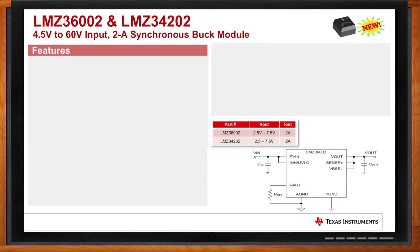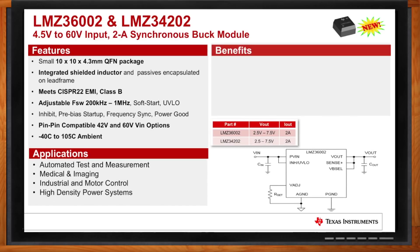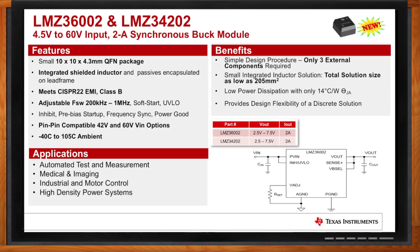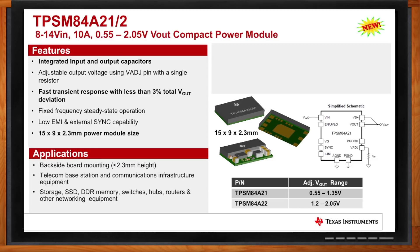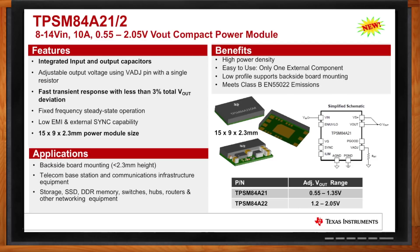The next family covers 60V and 42V input using a QFN-style package — very well suited for industrial applications needing a wide input voltage range, with output current up to 2A. It's feature-rich: variable frequency, power good, and the ability to sync the device. Finally, the TPSM84A21 and 22 are 14V-in, 10A output devices designed for low-voltage digital loads. Everything is integrated into the package and just one resistor sets the output voltage. The solution size is only 2.3mm thick, fitting on the backside of PCBs, and even with integrated capacitors the transient response is very impressive.